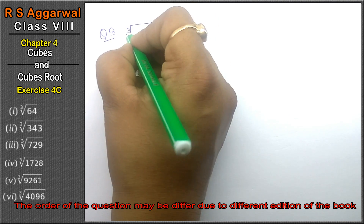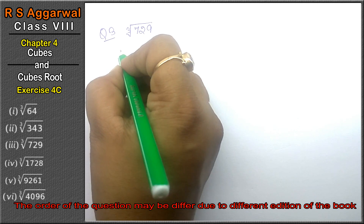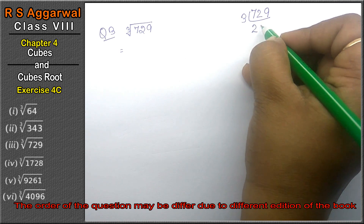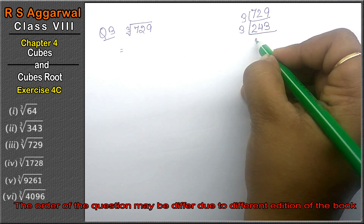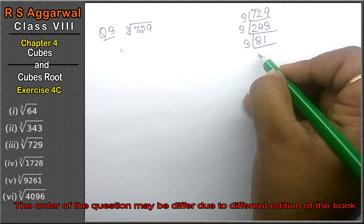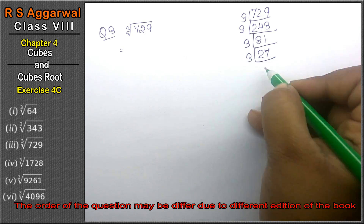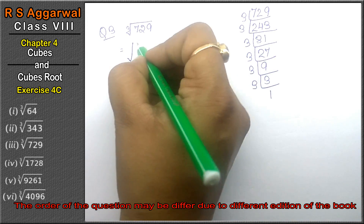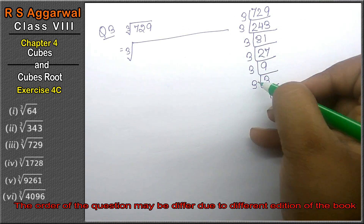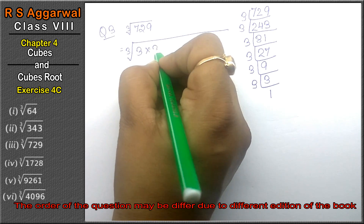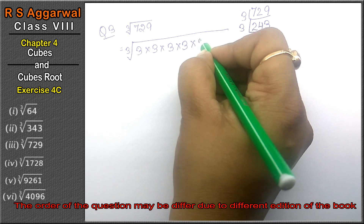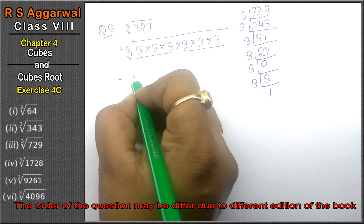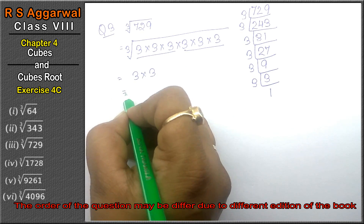Question number 3 is cube root of 729. We find the factors of 729. Dividing by 3 repeatedly: 729→243→81→27→9→3→1. So 729 = 3×3×3×3×3×3. Writing the cube root, we make pairs of 3. One pair of three 3s gives us 3, another pair gives 3. So 3×3 = 9 is the answer.